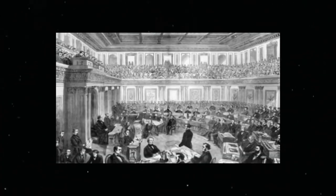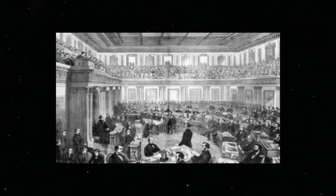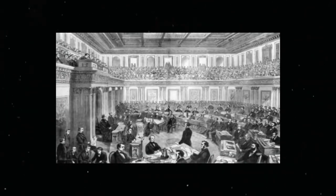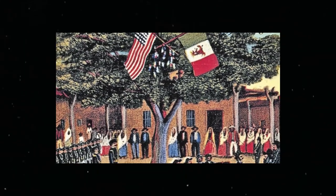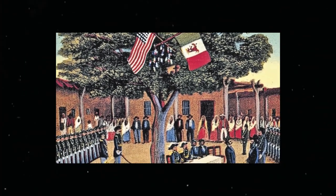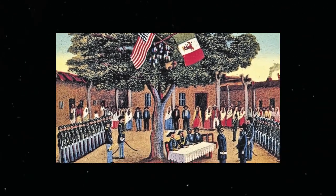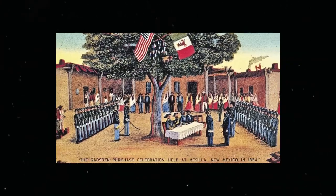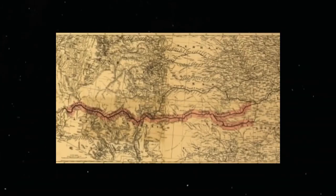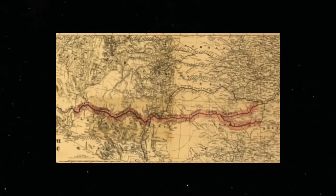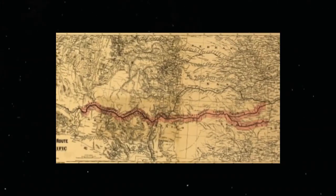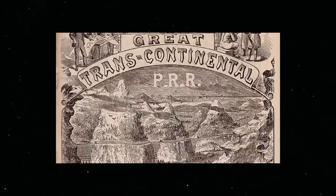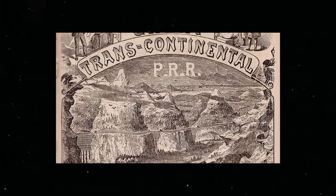In December 1853, the two countries reached an agreement known as the Gadsden Purchase, wherein the territory was ceded to the U.S. for $10 million. This purchase provided the necessary land for completing the construction of the Transcontinental Railroad.